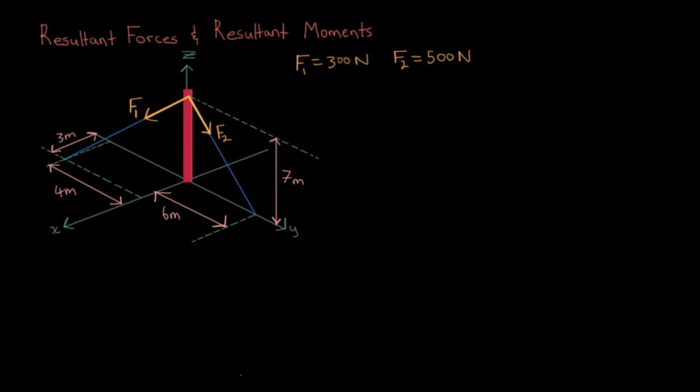To find the resultant force, it's much easier to write the individual forces as Cartesian vectors first. As you can see, the forces aren't given in Cartesian vector form. Instead, we have the magnitude and the directions they're pointing. We can easily convert to Cartesian vector form by multiplying the forces by their unit vectors. And here's how. Let's start with F1.